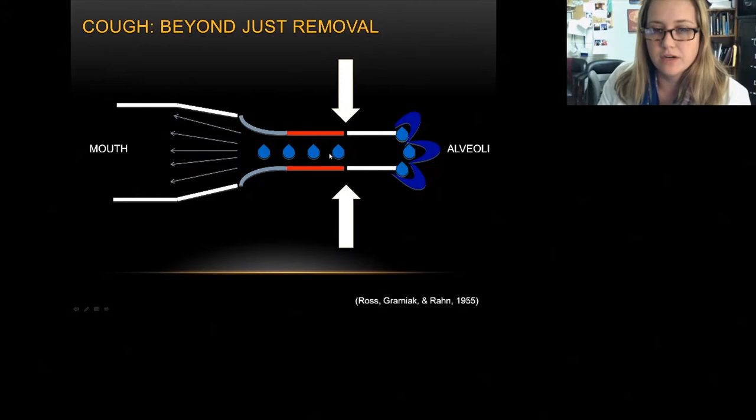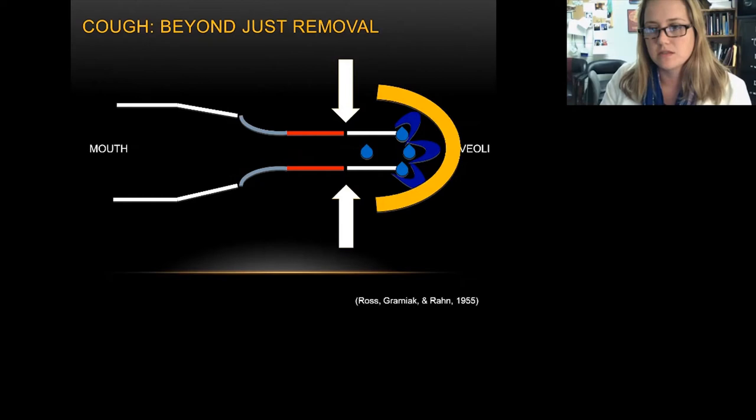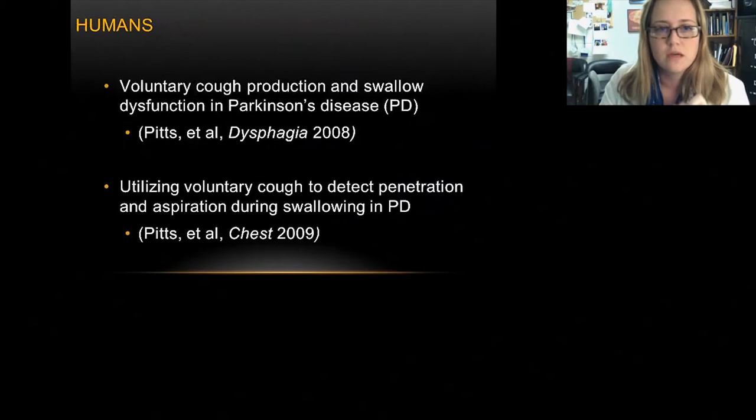Humans actually cough not just inspiration-compression-expulsion, but they begin to cycle between compression and expulsion to lower and lower lung volumes, which allows for greater clearance against gravity. The liquid is squeezed up during compression in the alveoli and then removed on the next cough.